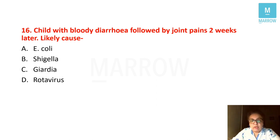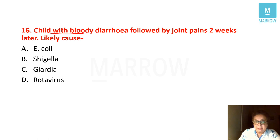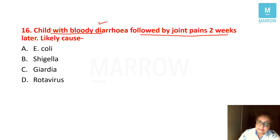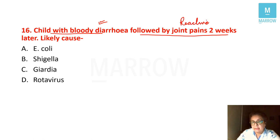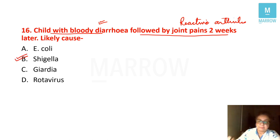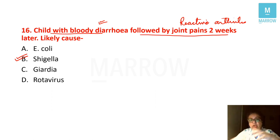A clinical question: a child had bloody diarrhea followed by joint pain two weeks later. The likely cause is Shigella — shigellosis followed by the complication of reactive arthritis. That's why clinical correlation with complications is so important for arriving at answers.